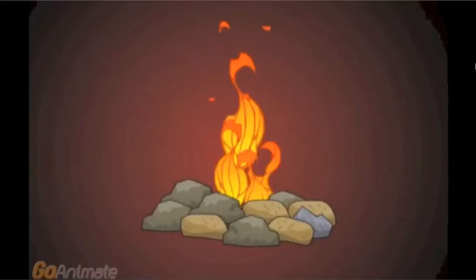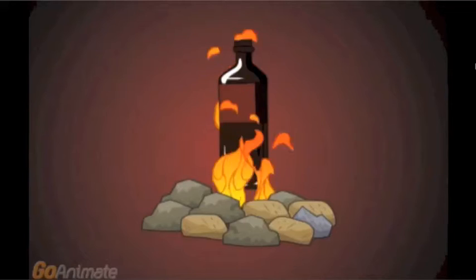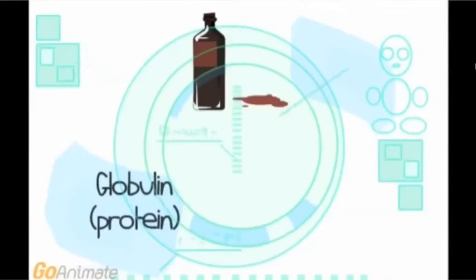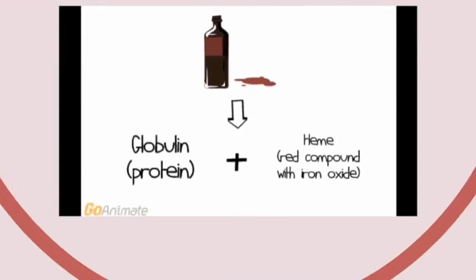Berzelius, in the following century, confirmed this finding and chemically split the blood pigment into two components: a protein structure known as globulin, and a red compound containing iron oxide known as heme. This was the start of iron therapy for anemia. Hope Saylor was the one who coined the term hemoglobin in 1862 and determined its structure for further study.